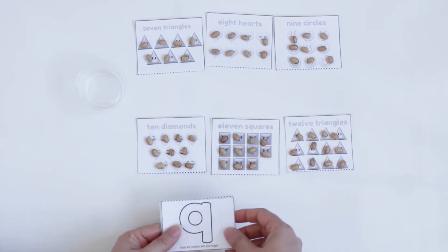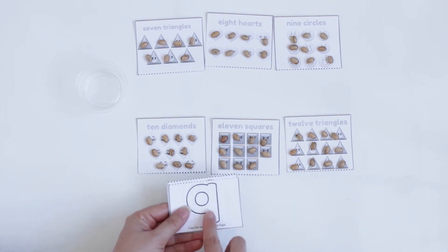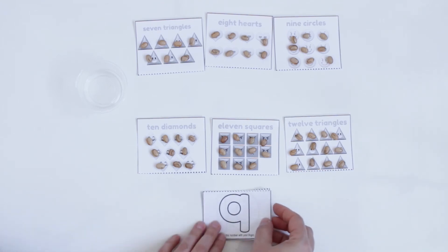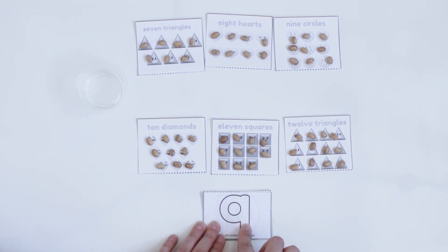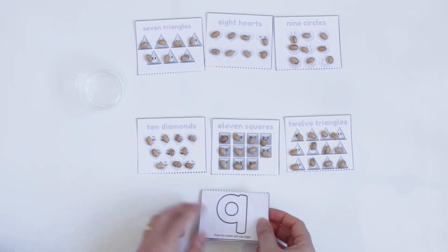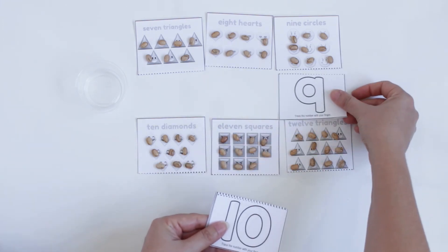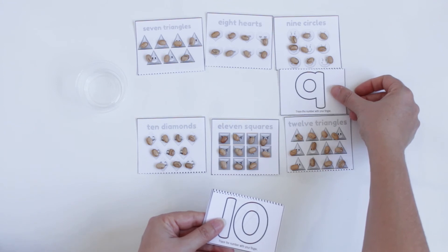And to end this activity, you ask them to match the number. So here, which number is that? You need to ask them. So, 9. And they need to trace. You ask them also to trace with their finger like that. And they need to identify, where do I have 9? 9 what? I have 9 circles. So I'm going to put here for 9 circles.